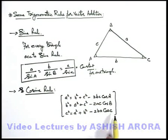Let's see different types of examples where we use sine rule and cosine rule for analysis of vector addition.